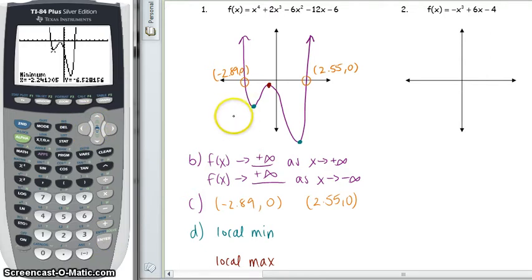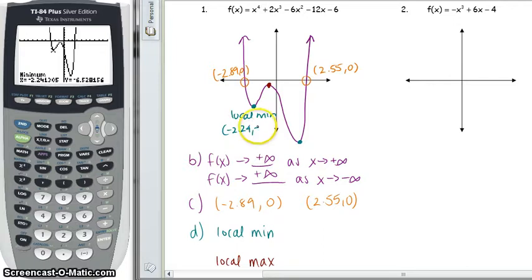So that gives us the point at our local min of negative 2.24, comma, negative 6.53. All right. So it's one of our local min points.